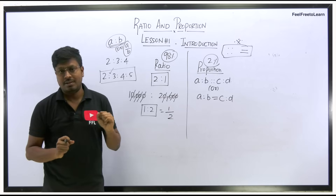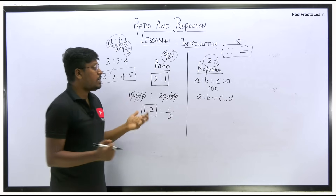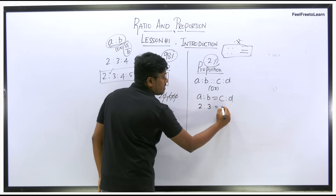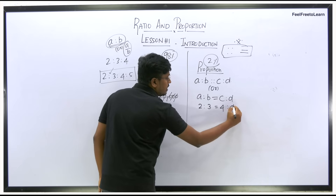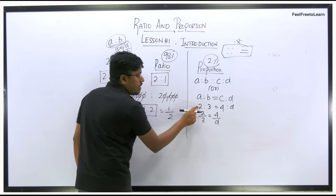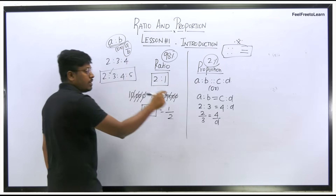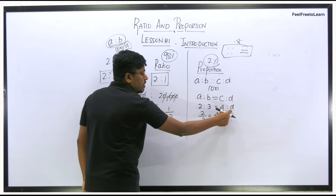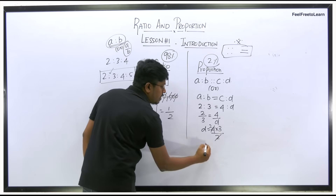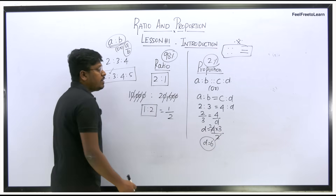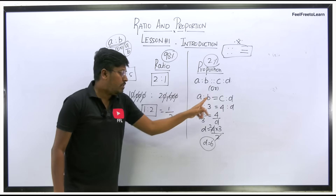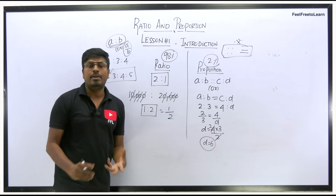If we need to calculate an unknown value in a proportion, it is easy. For example, 2:3::4:d. This can be written as 2/3 = 4/d. Cross-multiplying gives d = (4 × 3) / 2 = 6. So d equals 6. If you substitute d = 6, the left-hand side is 2:3 and the right-hand side is also 2:3. This is what proportion means.